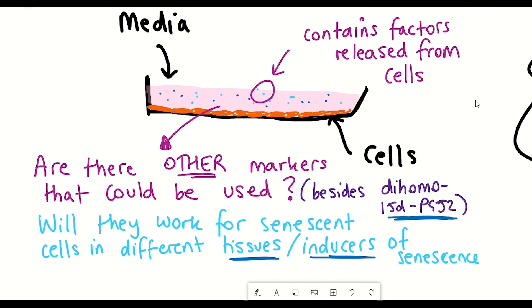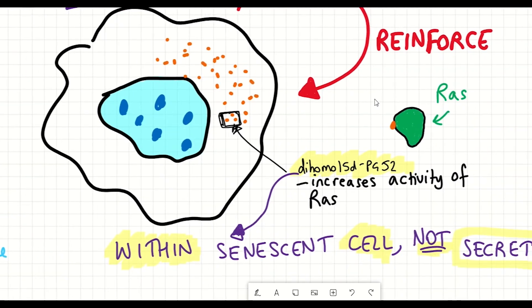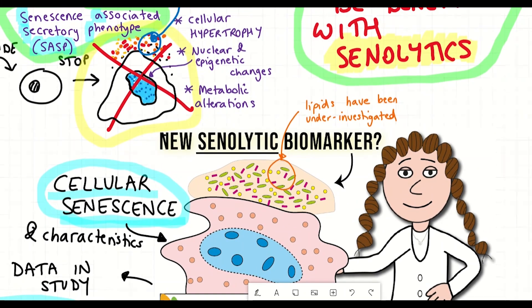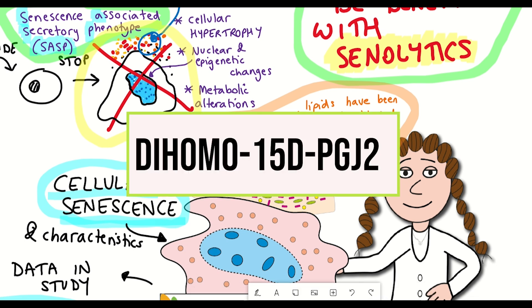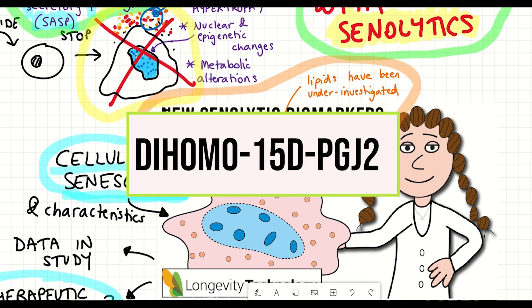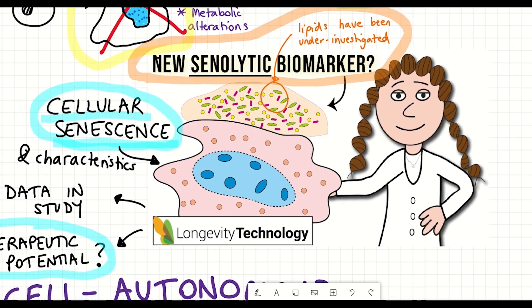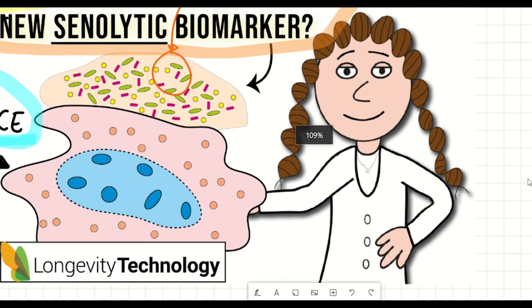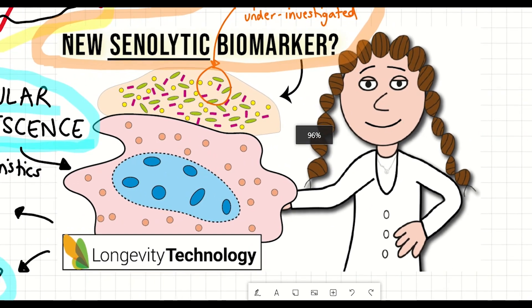And so all in all, this study further helps us to understand the role of lipids in the development of cellular senescence, and also highlights how this prostaglandin, I'll say it one more time, dihomo-15d PGJ2, accumulates in senescent cells, but gets secreted on senolysis, which could therefore be used as a biomarker to evaluate the efficacy of different senolytics.